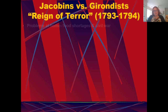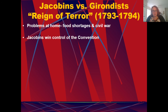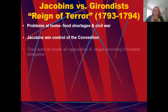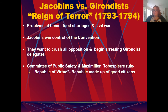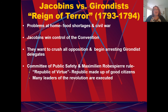The Reign of Terror pits the Jacobins versus the Girondists. Problems at home created food shortages and civil war. The Jacobins ultimately win control of the convention because the Girondists don't actually change anything — there is still massive debt and food shortage, and people aren't seeing change quickly enough. The Jacobins win and begin arresting the Girondin delegates to crush all opposition. The Committee of Public Safety and Maximilien Robespierre rule together — this is called the Republic of Virtue, made up of so-called good citizens. Many leaders of the revolution were executed because they didn't want them spreading ideas to overthrow the Committee of Public Safety.